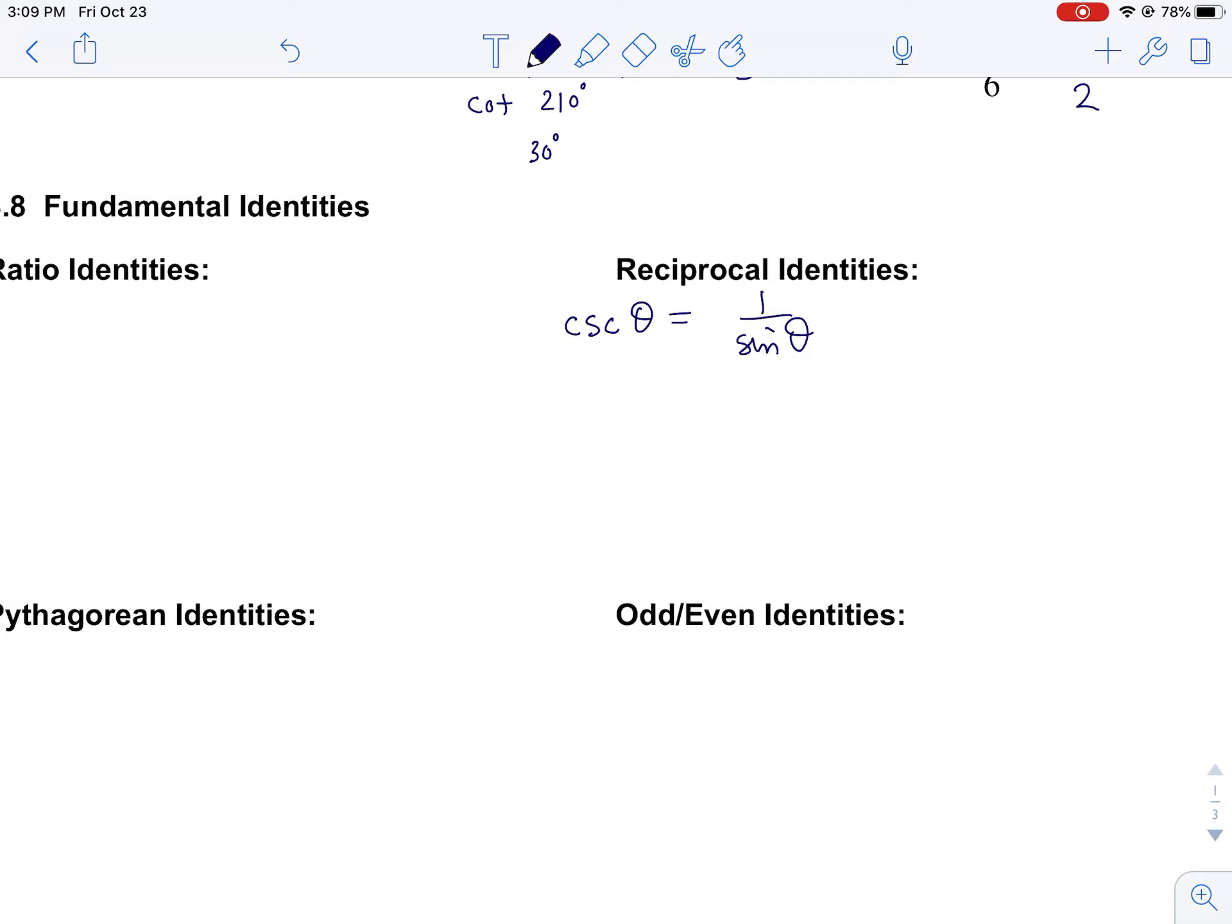For instance, the cosecant: cosecant θ equals 1 over sine θ. And for what it's worth, sine θ would also be 1 over cosecant θ. You could write that two different ways.